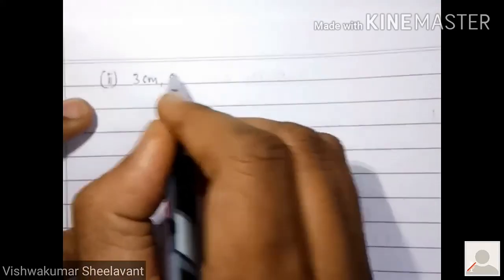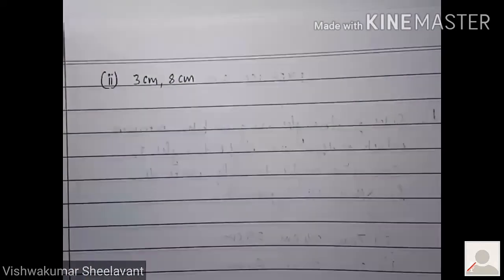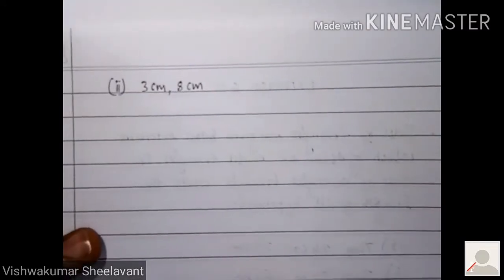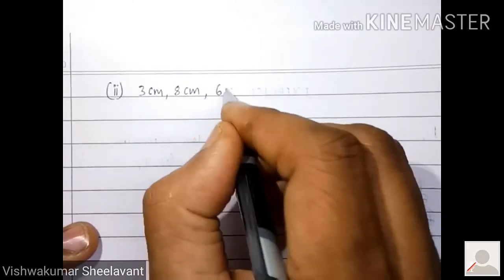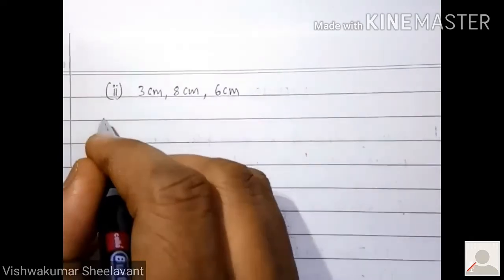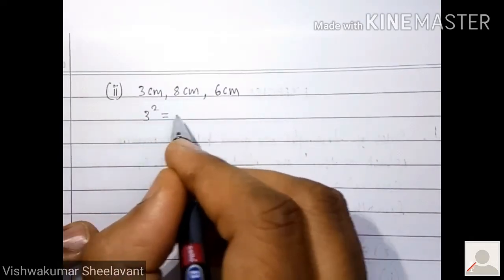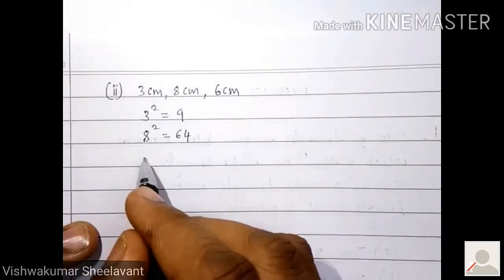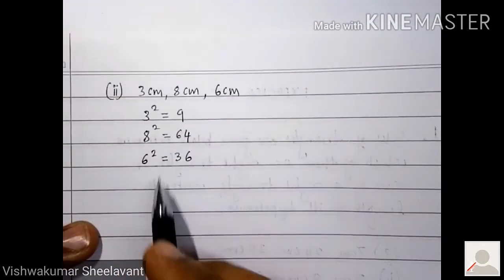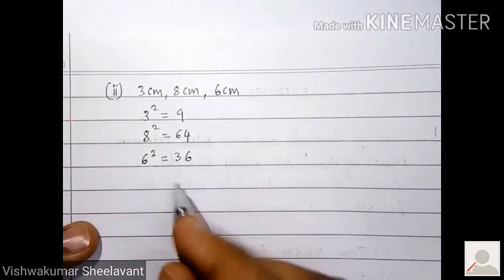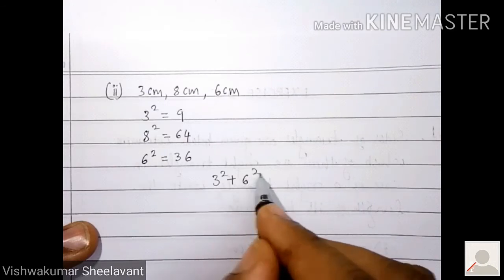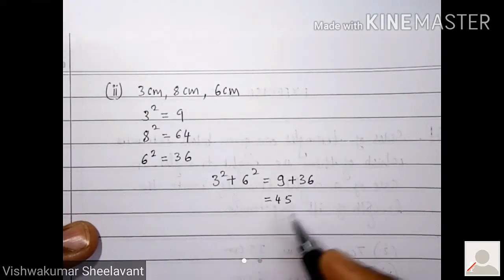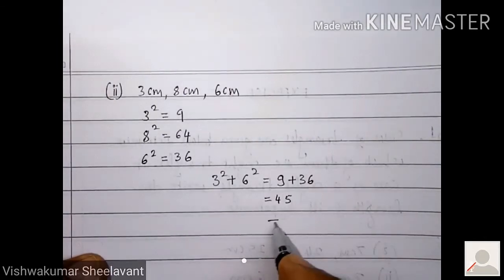The given 3 centimeter, 8 centimeter, and 6 centimeter. 3 square is 9, 8 square is 64, 6 square is 36. But we have to add smaller side squares together. 3 square plus 6 square is 9 plus 36, that is 45. And this is not equal to 64.